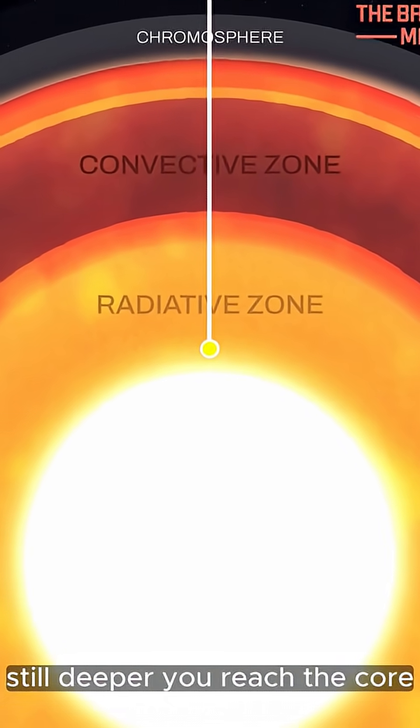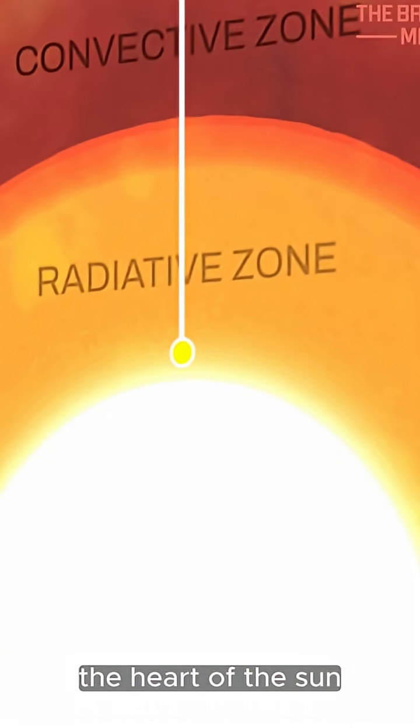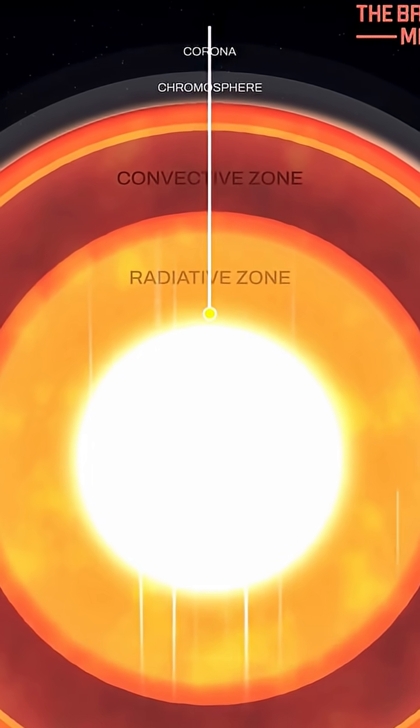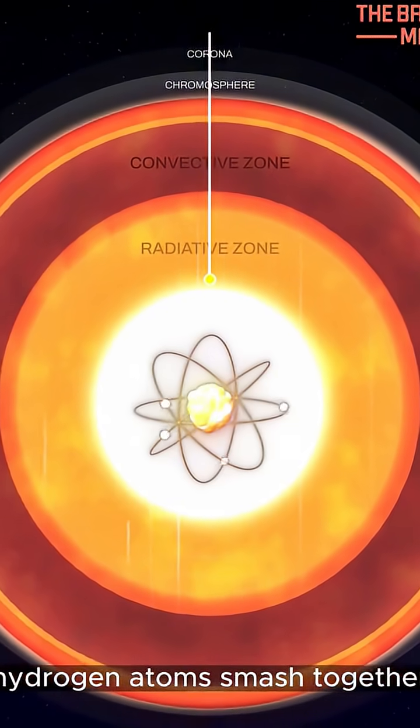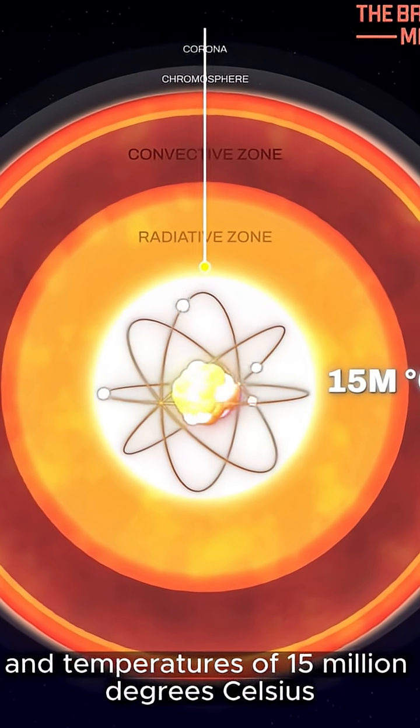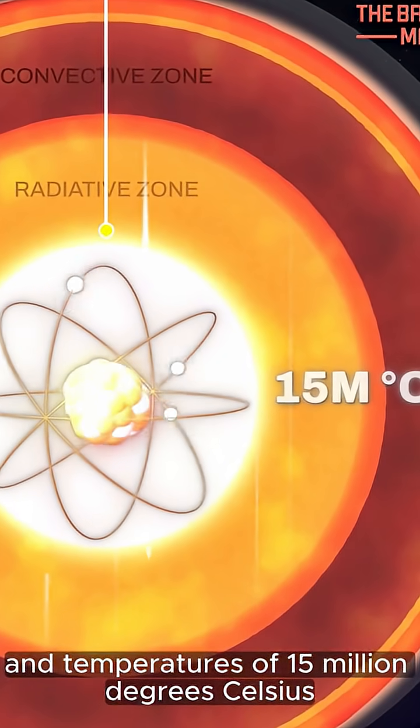Still deeper, you reach the core, the heart of the sun. Here, the real violence begins. Hydrogen atoms smash together. Nuclear fusion ignites. The result is helium, and temperatures of 15 million degrees celsius.